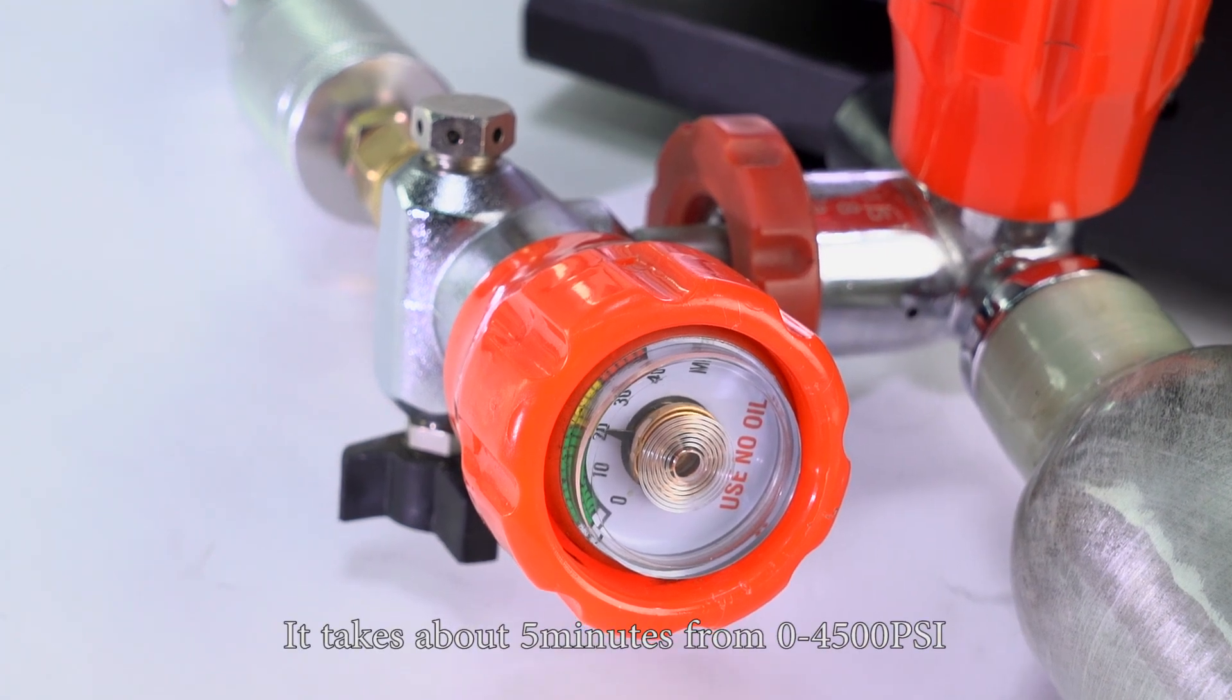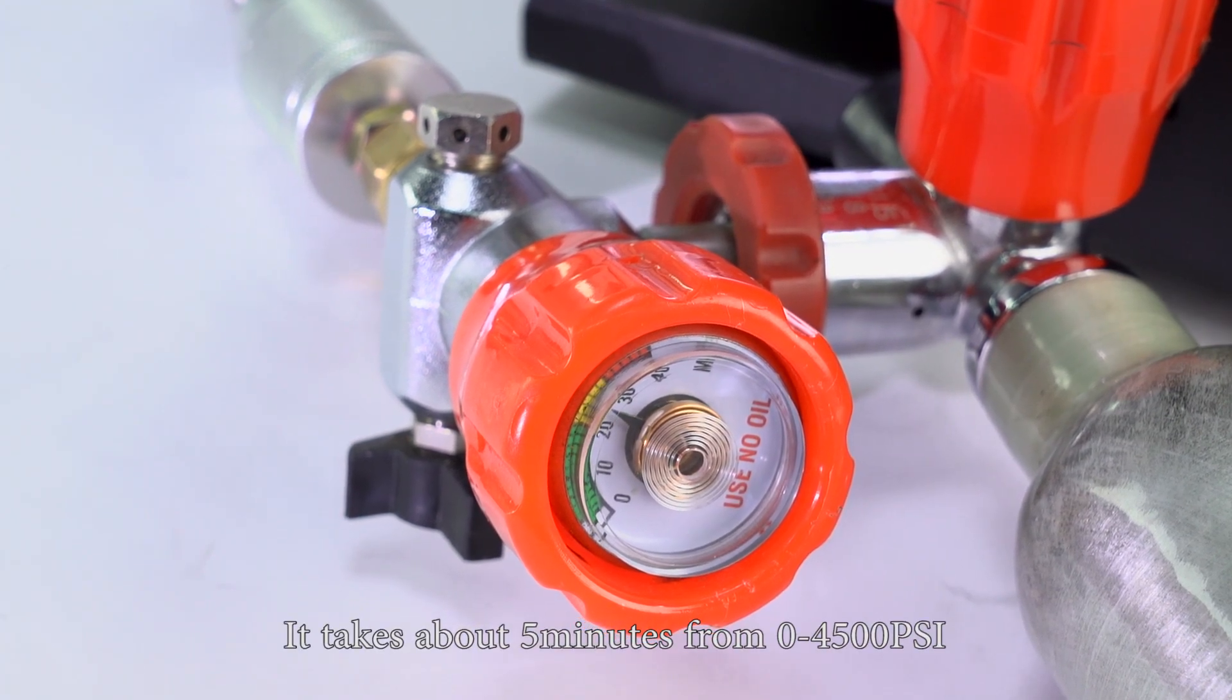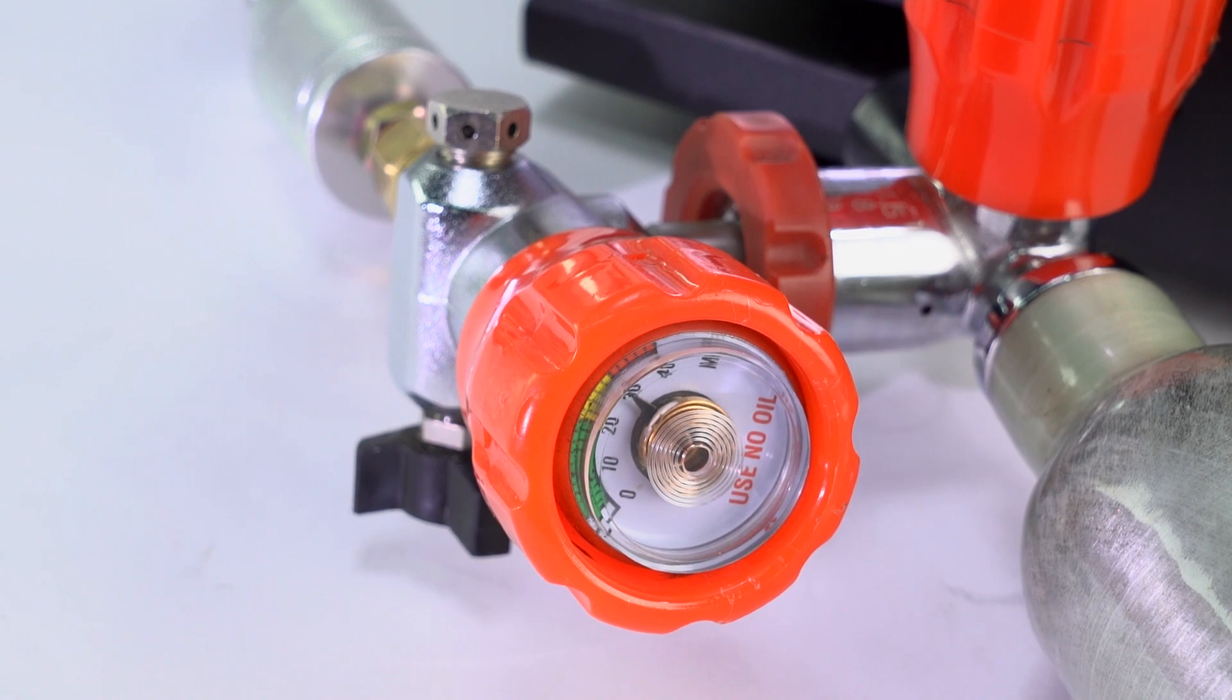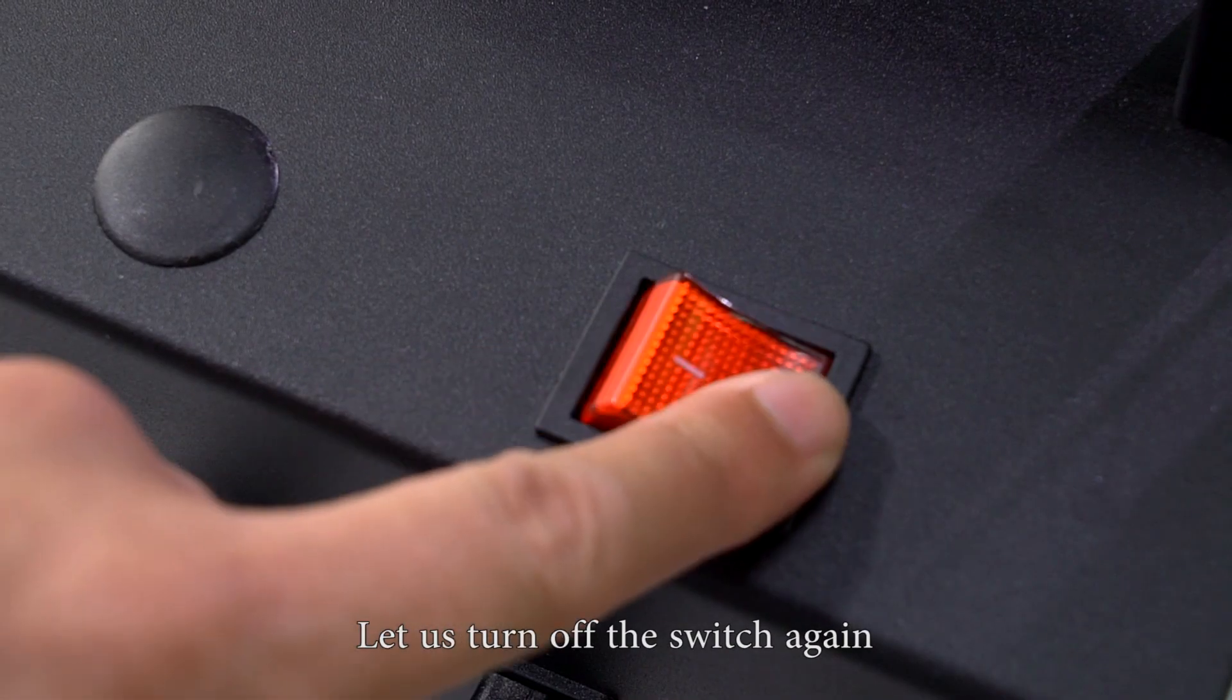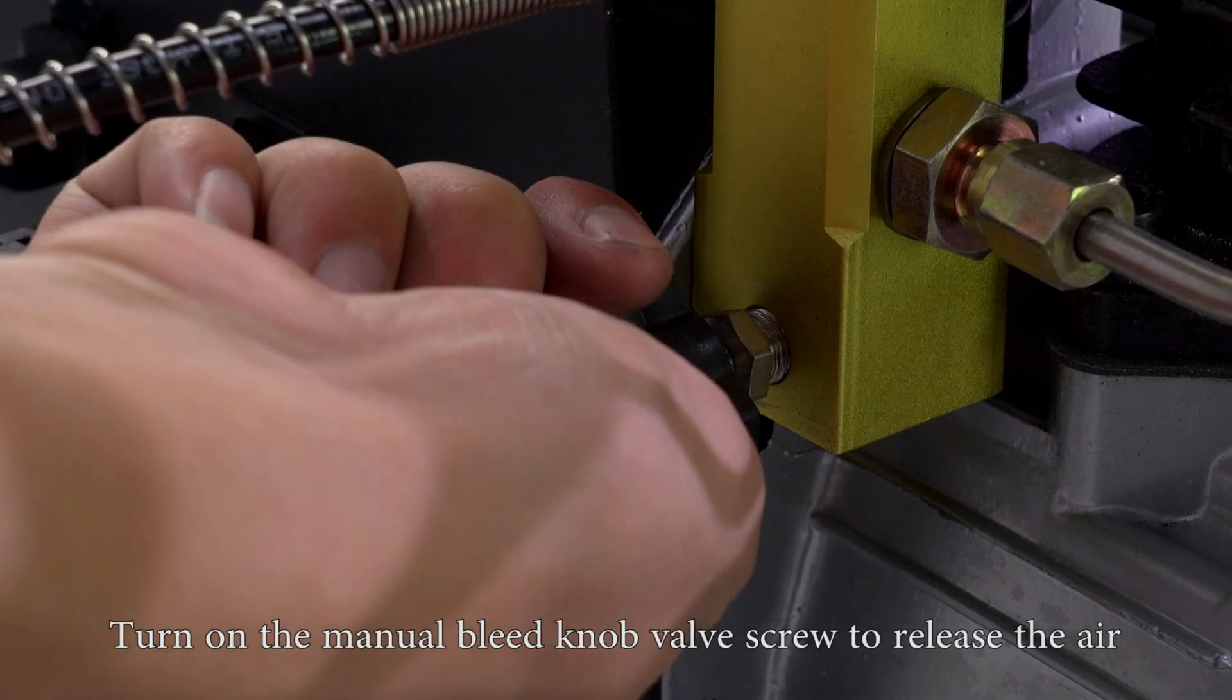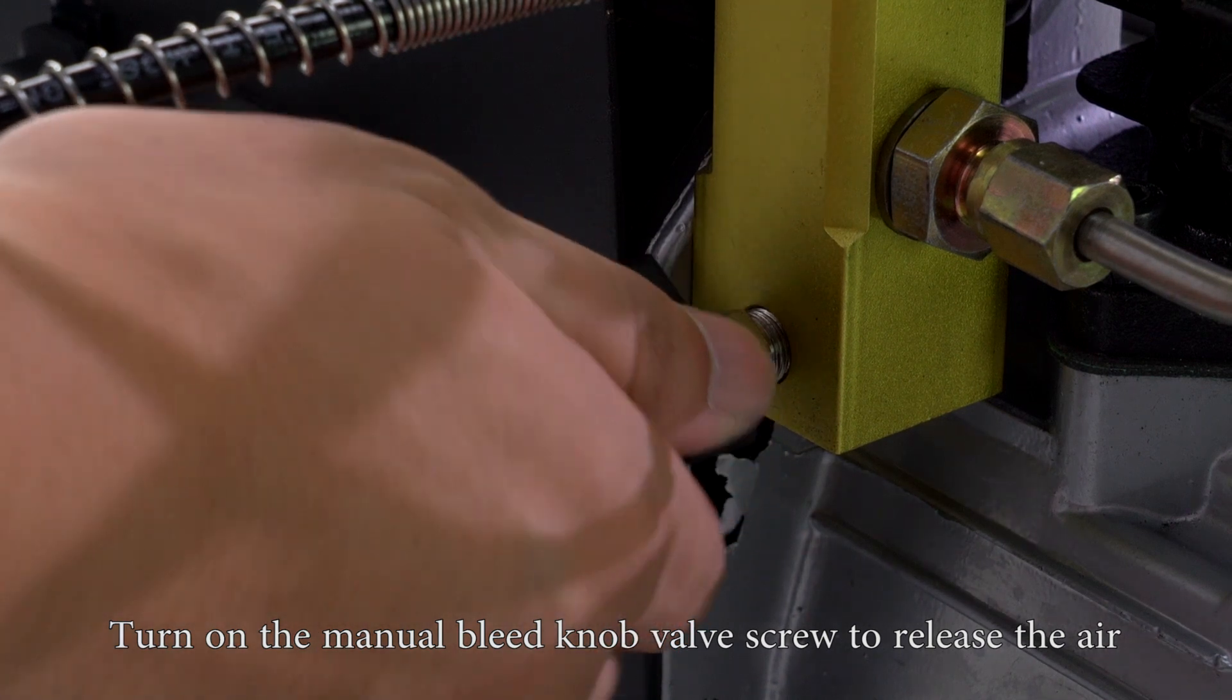It takes about 5 minutes from 0 to 4500 psi. Let us turn off the switch again. Turn on the manual bleed valve screw to release the air.